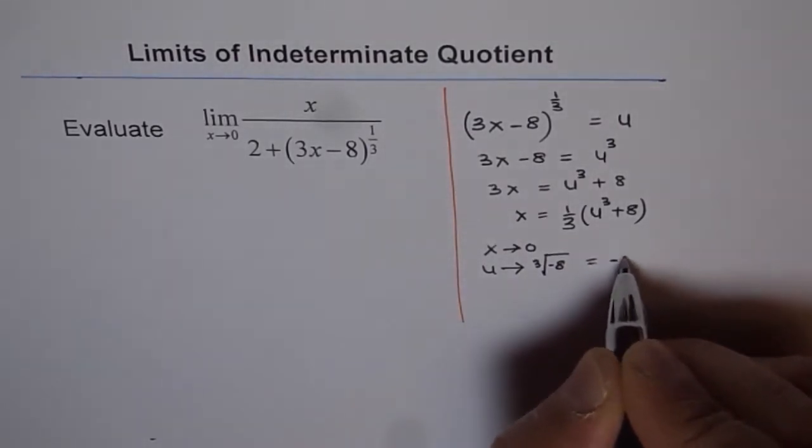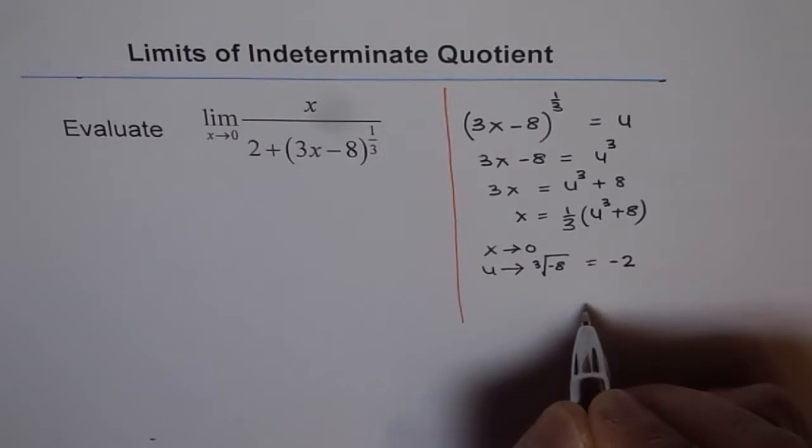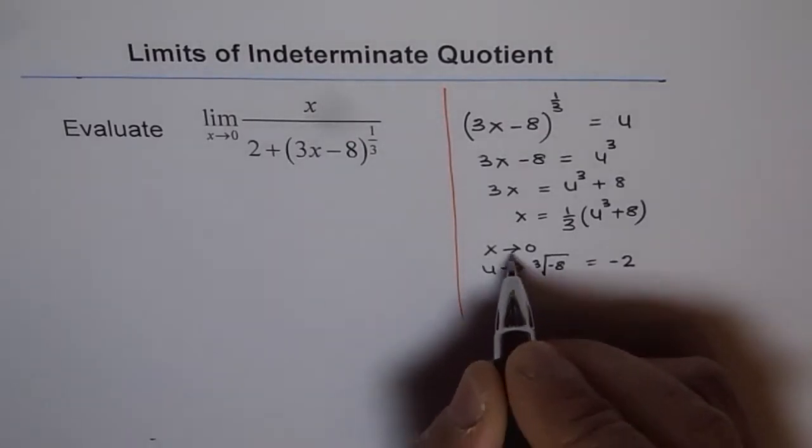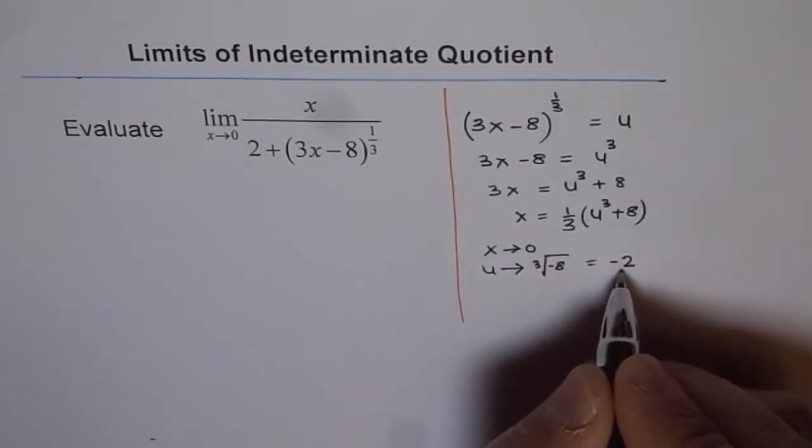So that is minus 2. So u approaches minus 2. So as x approaches 0, u approaches minus 2.